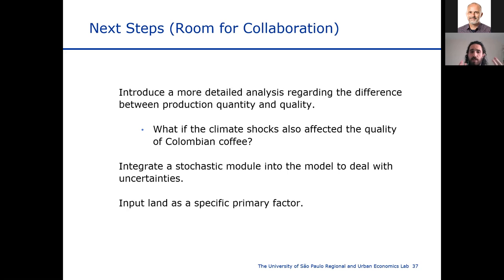Next steps for the research: first, we'd like to introduce more detailed analysis on the difference between production quantity and quality, since we're not accounting for the possibility that coffee produced in higher regions has lower quality than coffee from lower regions. Second, we'd like to integrate a stochastic model into the CGE to deal with uncertainties — using standard deviations from Federico's estimations to run many different scenarios. Finally, we can also input land as a specific primary factor, which is not done in the current model.